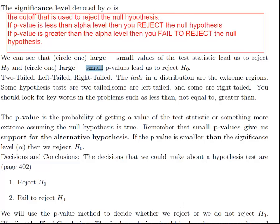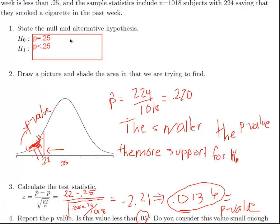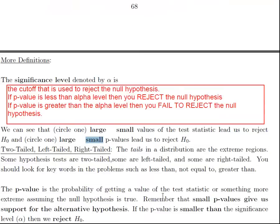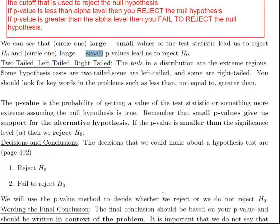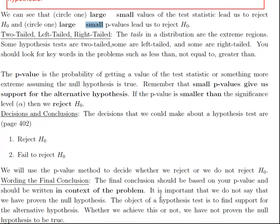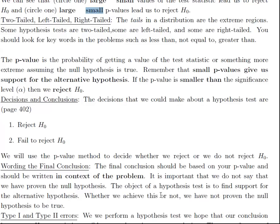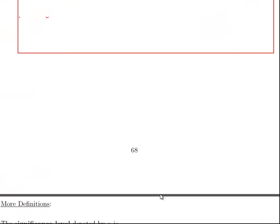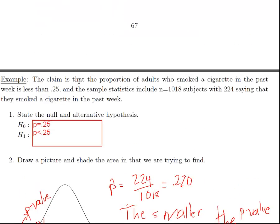We just did a left tail test in the previous example. That was because this was less than and we shade the area in the left tail. If this had been greater than, then we would have shaded the area in the right tail and it would have been a right tail test. Sometimes we do what's called a two tail test. That means we're interested in the area in both tails. You always decide what type of test it is based on the wording of the problem. The claim was that the proportion of adults who smoked in the past week is less than 0.25. So less than was my key word to use less than in the alternative.